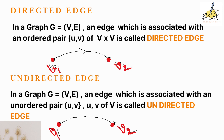Looking at the diagram, V1 and V2 are the two vertices joined by an arrow edge. The directed edges are shown by means of an arrow mark, which also shows the direction.